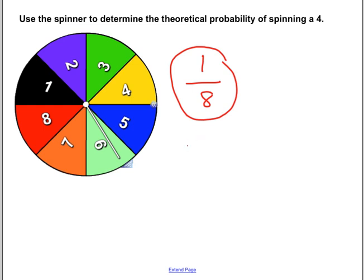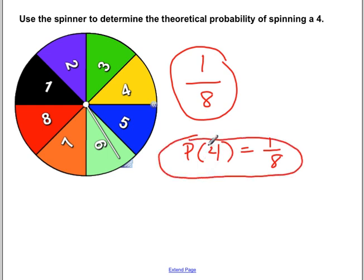1 out of 8 probability of spinning a 4. Now, if we were to write this with P as in probability, parentheses, it's asking you spinning a 4. So it's going to be P(4), it is a 1 in 8, 1 eighth probability of it happening. And that would be the proper way to write this answer so that anyone can look at it and know that spinning a 4 would have a 1 in 8 chance of happening.